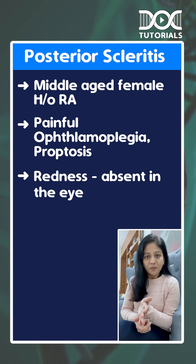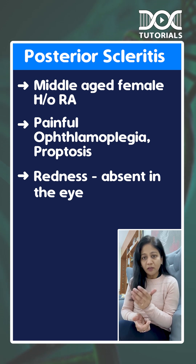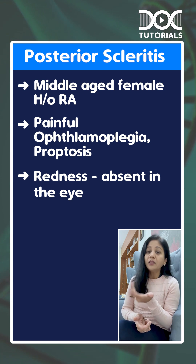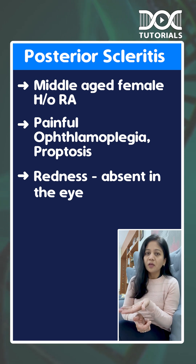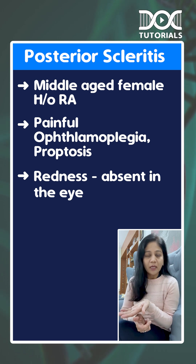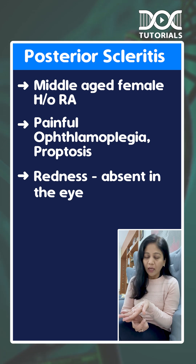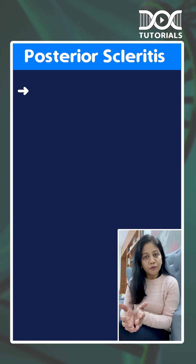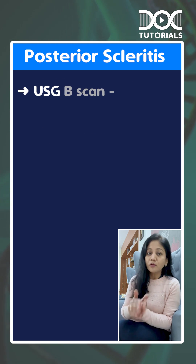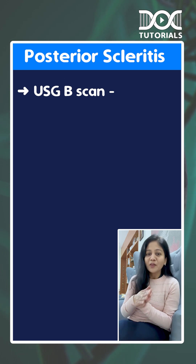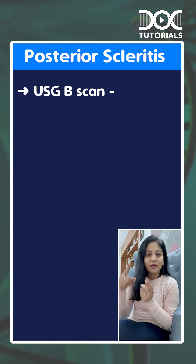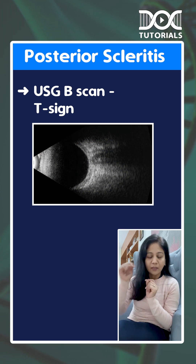When we have such a patient, we might think about thyroid eye disease or any other mass lesion, for which we may get an imaging done. But before that, if we happen to do an ultrasound B-scan, we see a characteristic sign — that is the T sign.